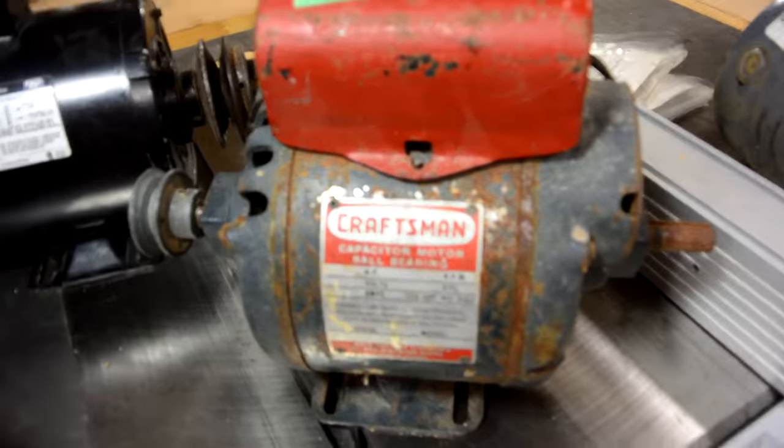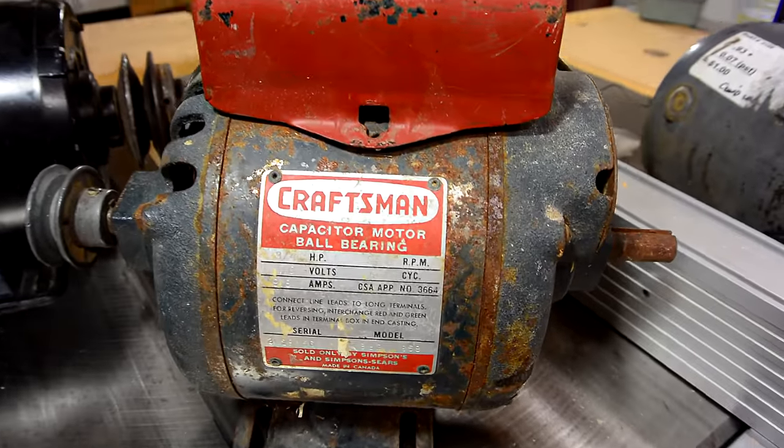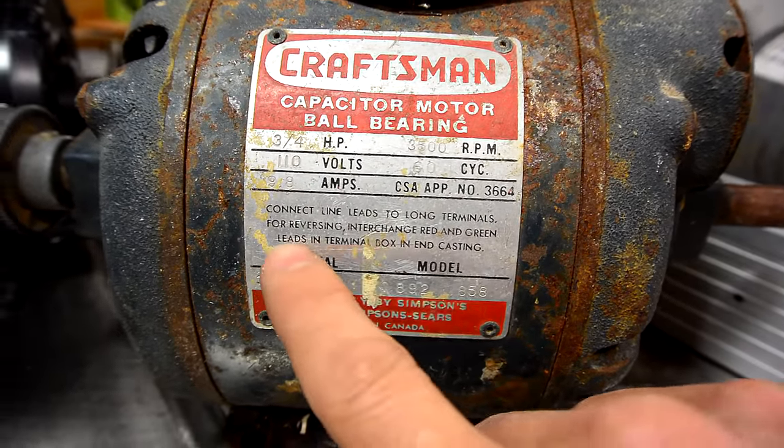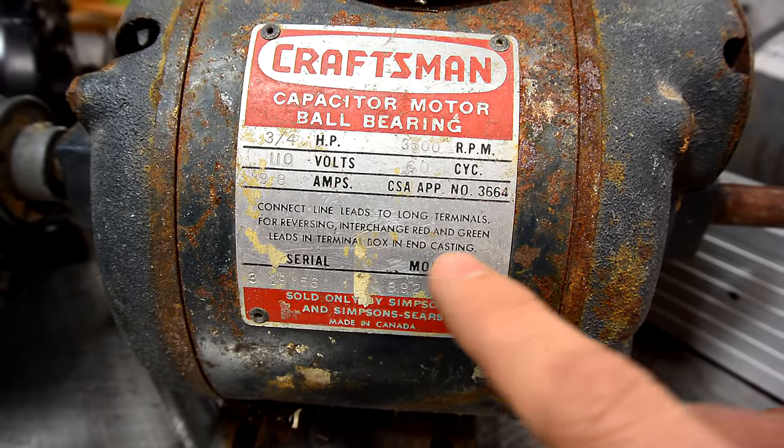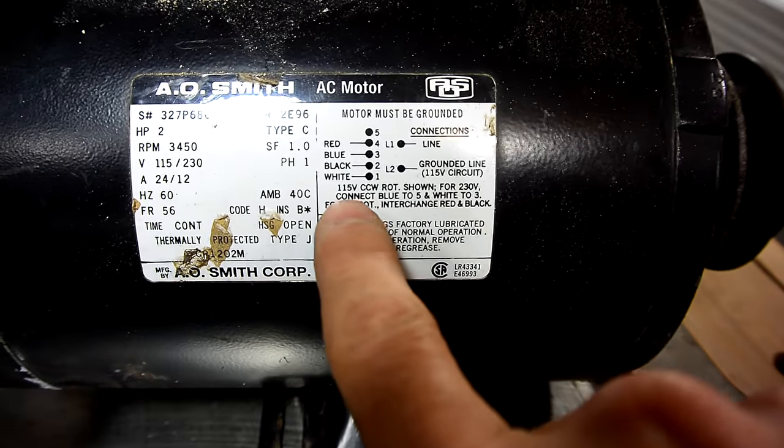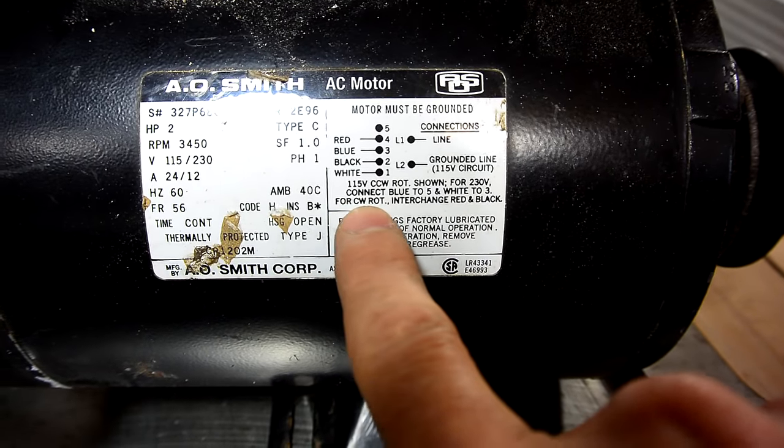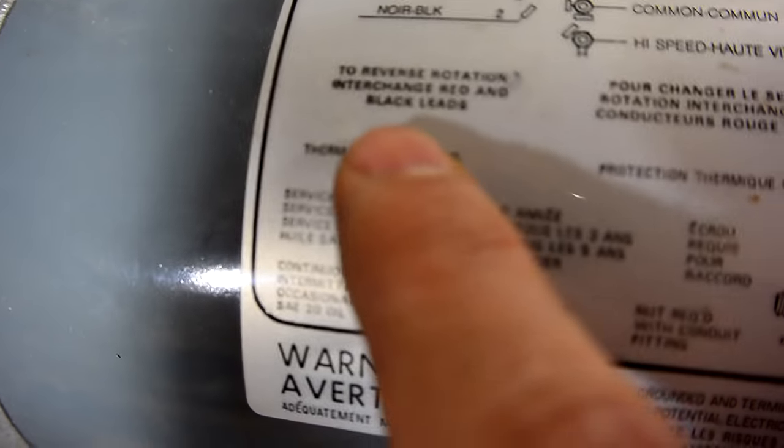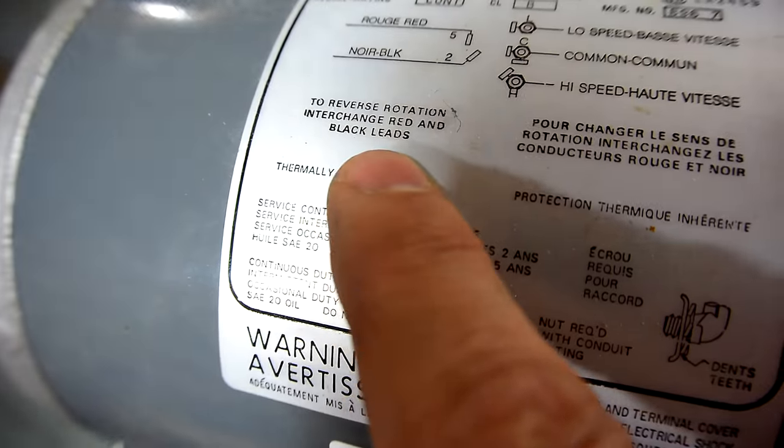But these motors here can be reversed and reversing is always reversing the starter winding. See here for reversing, interchange red and green leads in terminal box in end casing. Basically reversing the polarity to the starter winding. On this one it says for counterclockwise rotation, interchange red and black. Again reversing the starter winding. And on this one it says to reverse rotation, interchange red and black wires. So reversing a single phase induction motor is always a function of reversing the polarity to the starting winding.